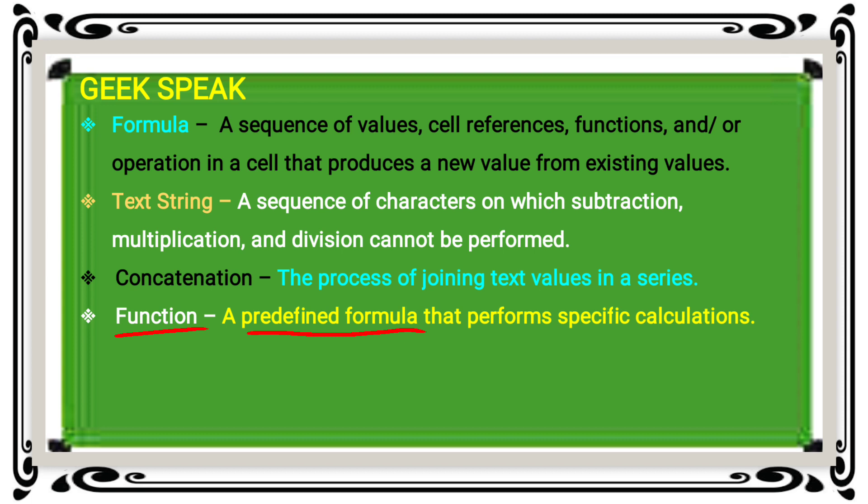For example, specific calculations — maximum, minimum, count, sum, average. Whatever process is used for finding these calculations is a predefined function. MAX is maximum, MIN is minimum, AVERAGE is average.